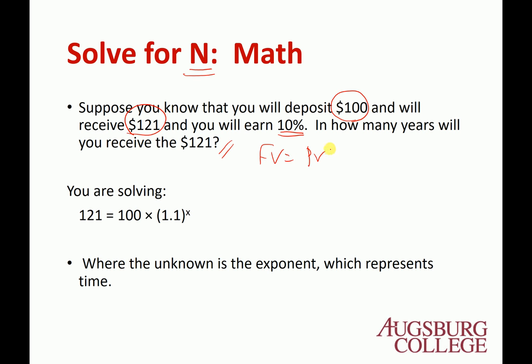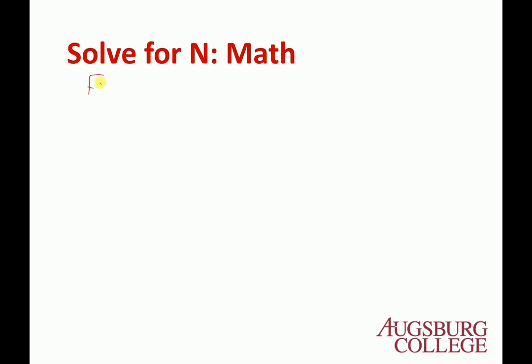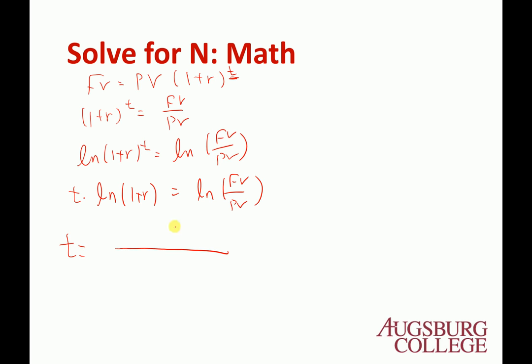From this you need to find T. 121 equals 100 times 1.1 to the power T, and T is the unknown exponent. Let's rearrange it. (1 + r)^T equals future value divided by present value. If you don't know the exponent, we need to take a log to get it. Take the natural log for both sides. This gives T times log(1 + r) equals log(FV/PV). So T equals log(FV/PV) divided by log(1 + r).